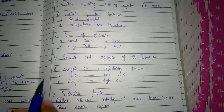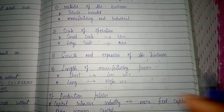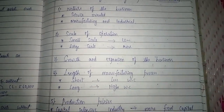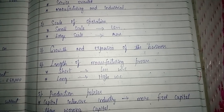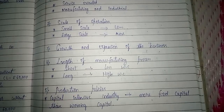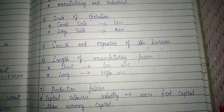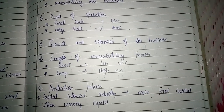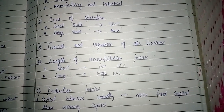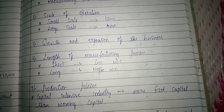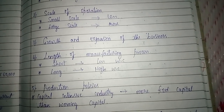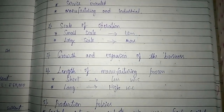The fourth factor is length of the manufacturing process. If a company has a shorter manufacturing process, it requires less working capital. If the process is long, it requires higher working capital. For example, a company with only three processes in manufacturing requires less working capital compared to a company with five processes.